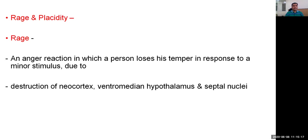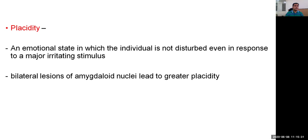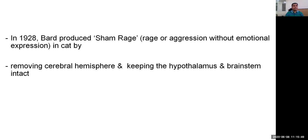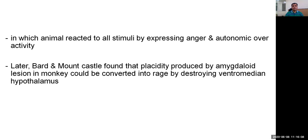Rage is an anger reaction in which a person loses temper in response to a minor stimulus because of destruction of the cortex, ventromedian hypothalamus, and the septal area. Placidity is the opposite — an emotional state in which the individual is not disturbed even by a major irritating stimulus. Bilateral lesions of the amygdala lead to greater placidity. In 1928, Bard produced sham rage — rage or aggression without emotional expression — in animals like cats by removing the cerebral hemispheres while keeping the hypothalamus and brainstem intact, causing the animal to react to all stimuli with anger and autonomic overactivity. Bard and Mountcastle found that placidity produced by amygdaloid lesions in monkeys could be converted into rage by destroying the ventromedian hypothalamus.